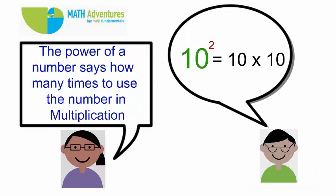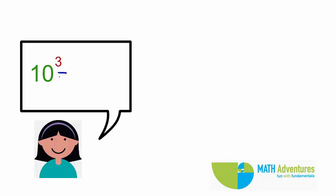So 10 to the power 2 or 10 squared is equal to 10 into 10 which is nothing but 100. 10 cubed is equal to 10 into 10 into 10 which is nothing but 1000.